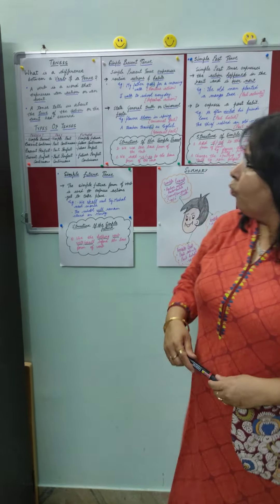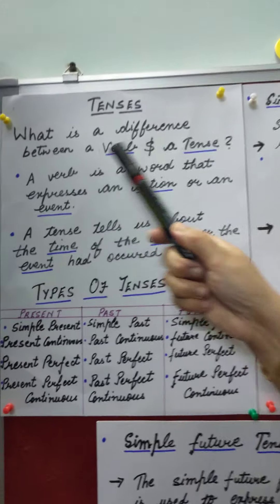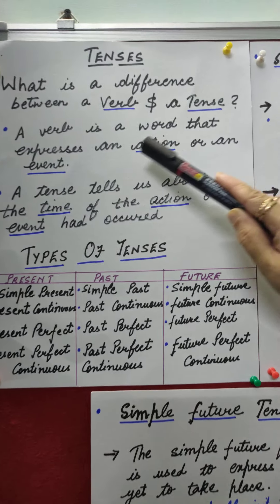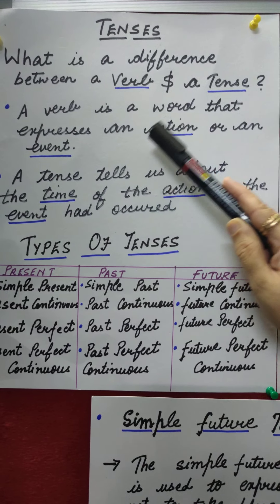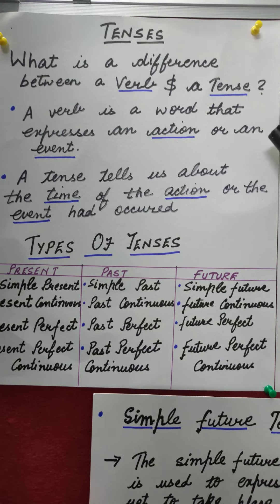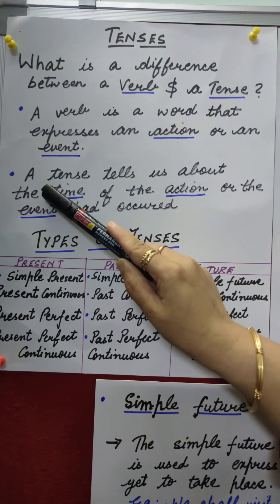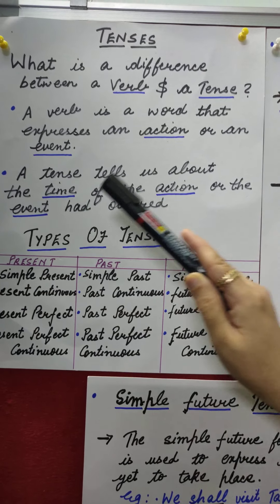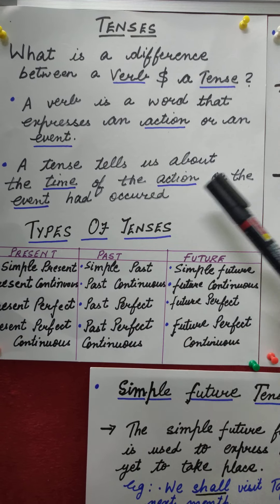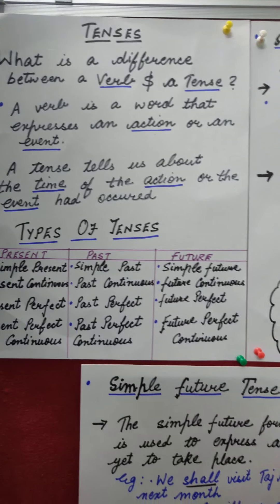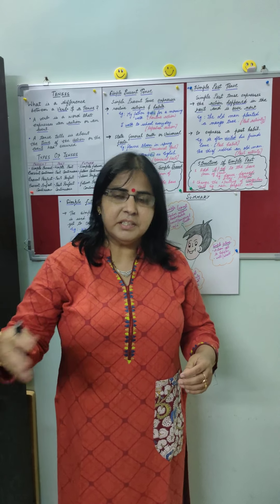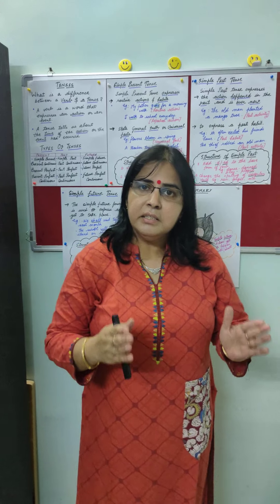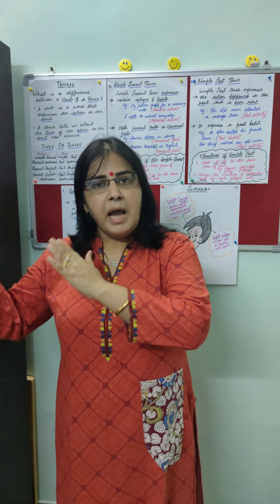Let us see what is the difference between a verb and a tense. A verb is a word that expresses an action or an event. Whereas a tense tells us about the time of the action or the event that occurred. A verb is an action, whereas the tense tells us the time when the action or the event has occurred.